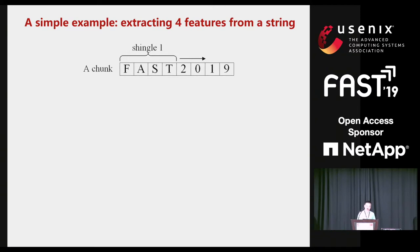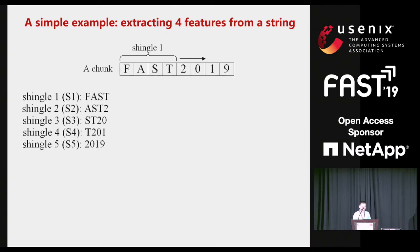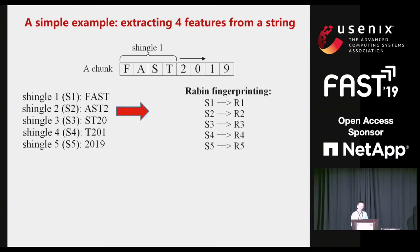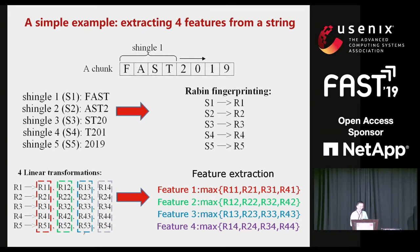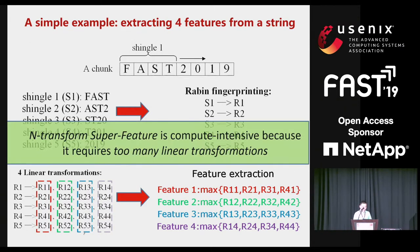Here we provide a detailed example to show how the traditional n-transform super feature approach extracts four features from a string. It first generates rolling fingerprints using a rolling hashing window, then linearly transforms each rolling fingerprint four times to produce four new values. Finally, the four max values from all transformed sets are selected as features. Therefore, the n-transform super feature approach is computationally intensive since it requires too many linear transformations.